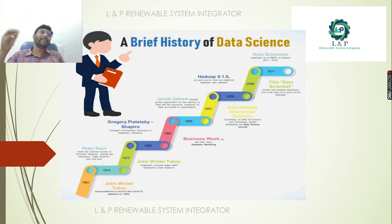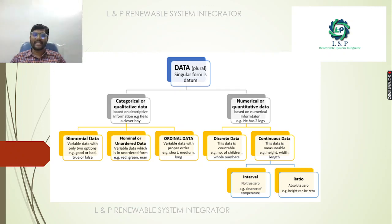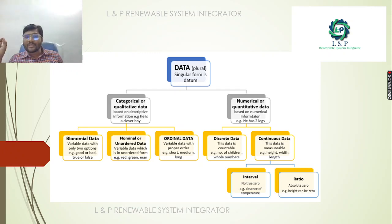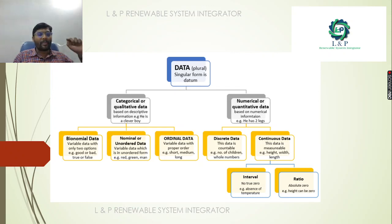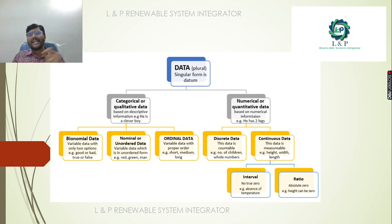There are many important components inside data science. The first and foremost is data, which is a plural form. Data can be categorized into two types: qualitative, based on descriptive information, and quantitative, based on numerical information. In qualitative or categorical data, we have binomial data, unordered data, and ordered data. In numerical data, we have discrete data and continuous data, and within continuous data, we have interval and ratio.